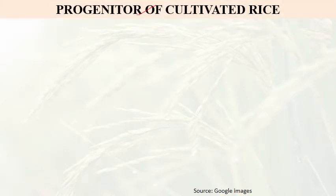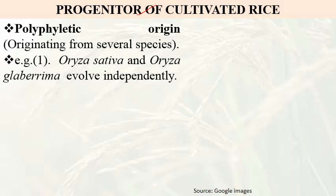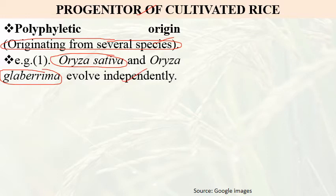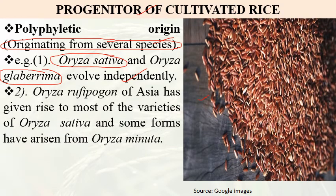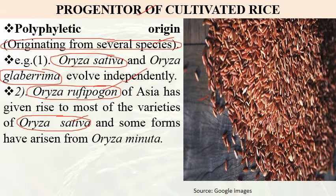Next comes the progenitor of cultivated rice. There are two views on the origin of cultivated rice. The first is polyphyletic origin, meaning originating from several species. Under this view, Oryza sativa and Oryza glaberrima evolved independently of each other. Oryza rufipogon of Asia gave rise to most varieties of Oryza sativa, while some forms arose from Oryza minuta as well.